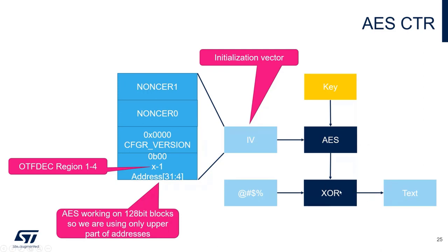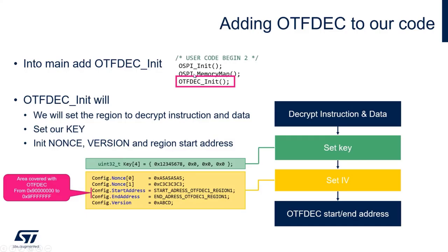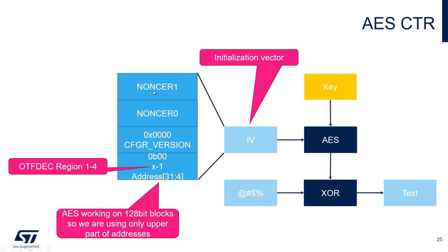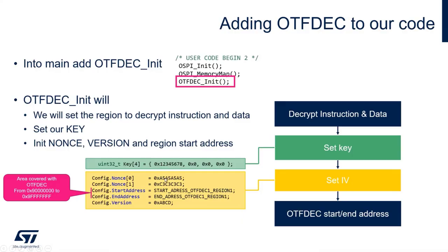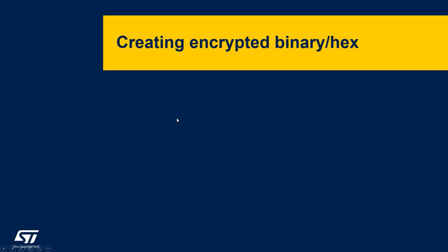I was not able to measure any decryption delay, which is good. We add the decryption using the on_the_fly_decryption_init function from octo_spi.c. This function basically sets the key — which I selected as 1, 2, 3, 4, 5, 7, 8 — then sets the initialization vector with nonce values A5C3, version ABCD, and the parameter specifying which location is covered by on-the-fly decryption. In our case it will cover the region at 0x90000000 because that's where OctoSPI 1 is. We only need to add this into our code.